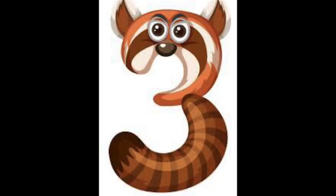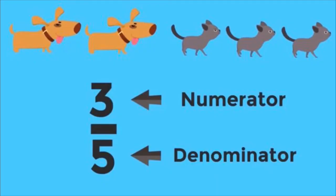What fraction of the pets are cats? Three! Awesome! Three is the correct answer. This fraction is called three fifths. We have come to the end of today's lesson.